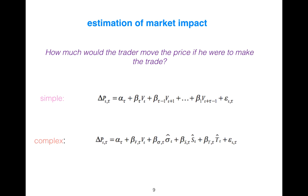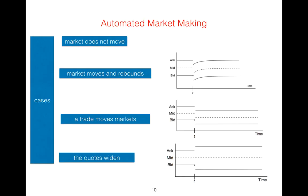The next variable, Ŝ(t), is the average spread observed during those statistics. The last variable, T̂(t), is the average clock time between every two subsequent trades. There are four cases: market doesn't move; the next case is market moves and rebounds.